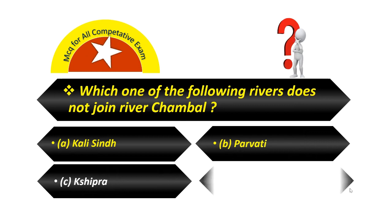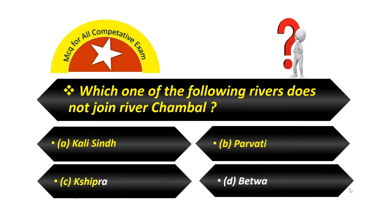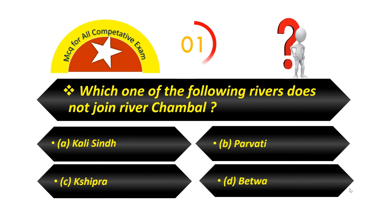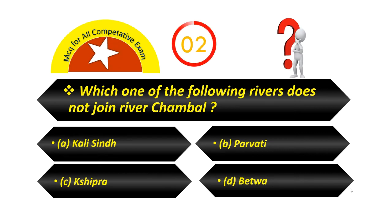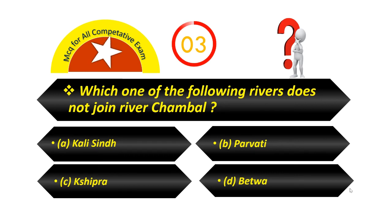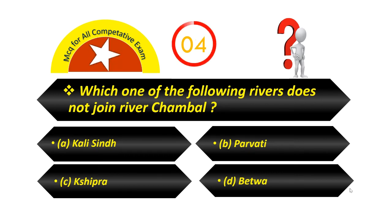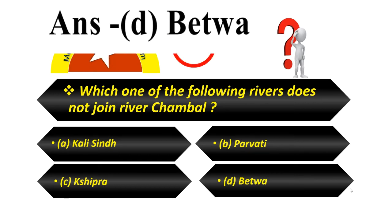Which one of the following rivers does not join river Chambal? Option A — Kalisindh. Option B — Parvati. Option C — Sipra. Option D — Baituwa. Your answer is Baituwa.